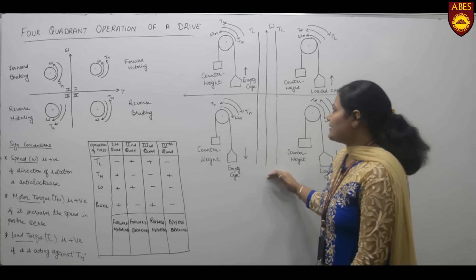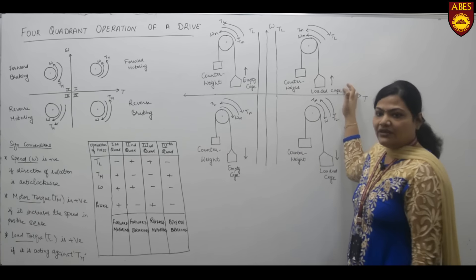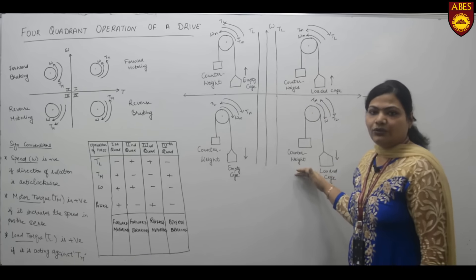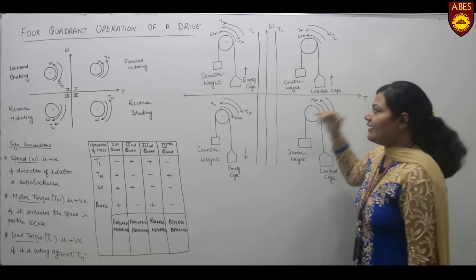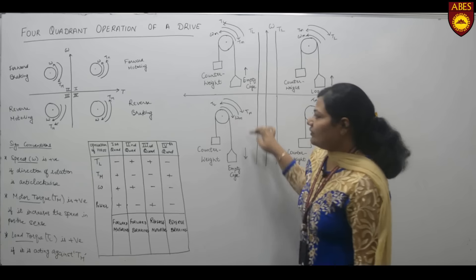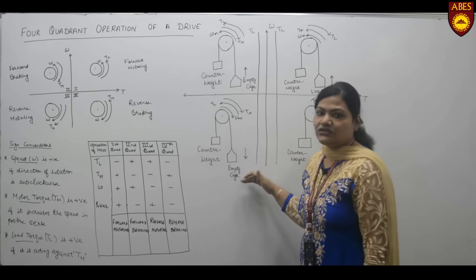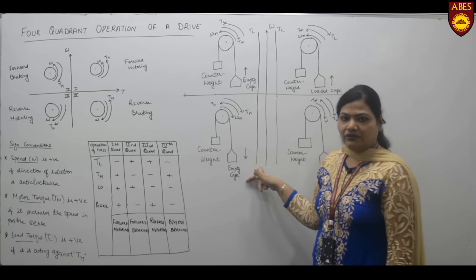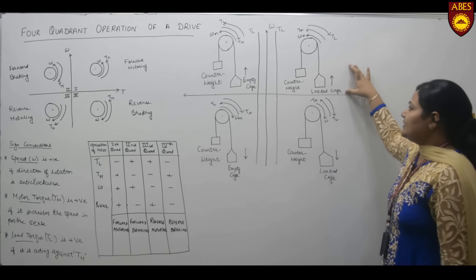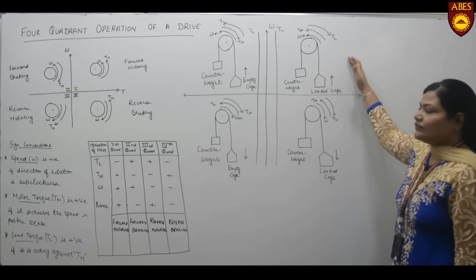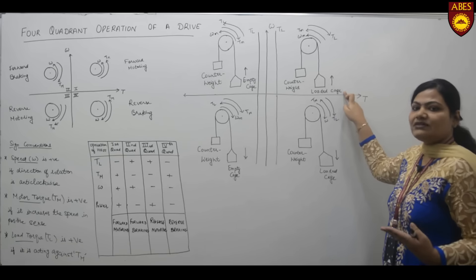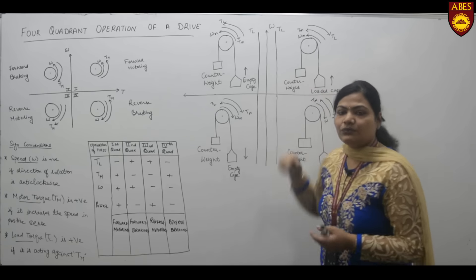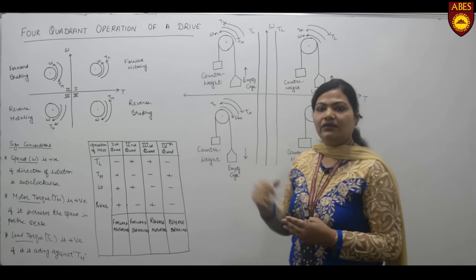The four quadrant operation can be explained clearly with the help of a hoist example. We take a loaded cage and an unloaded (empty) cage. In the first and fourth quadrants we are hoisting the loaded cage, and in the second and third quadrants we are taking the empty cage — hoisting it up in the second quadrant and lowering it down in the third quadrant. The counterweight has a weight more than the empty cage but less than that of the loaded cage.